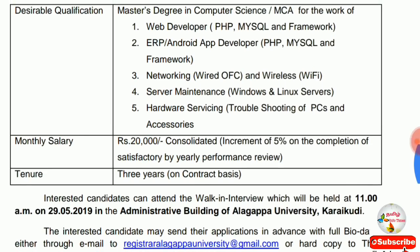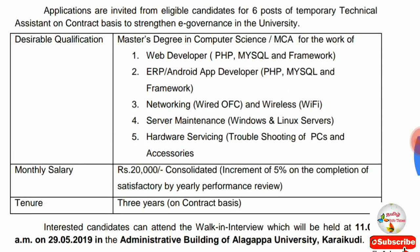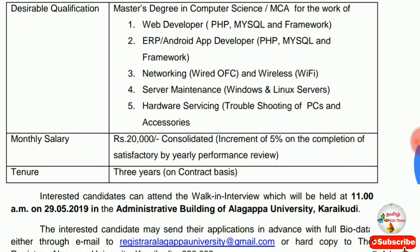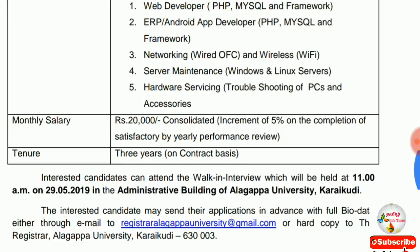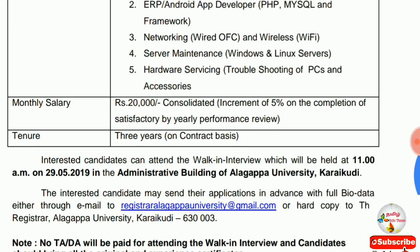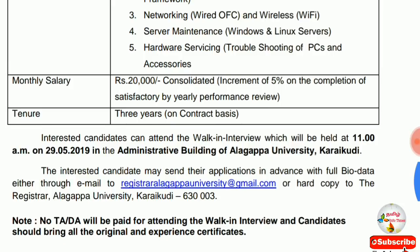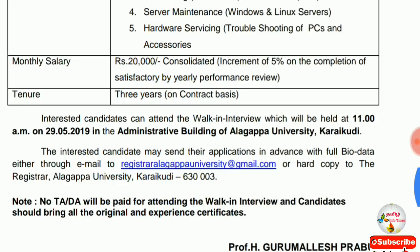We will see here — there is a monthly pay of 20,000. Consolidated increment of 5%. We will review the performance and talk about the content and the process.